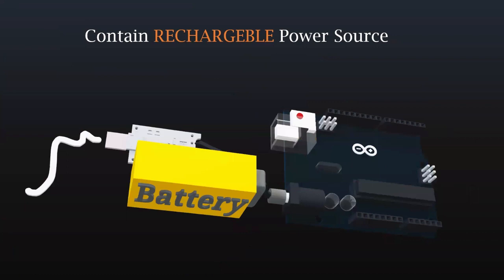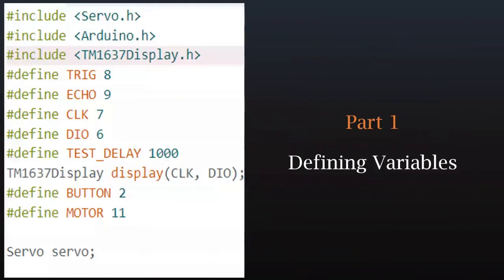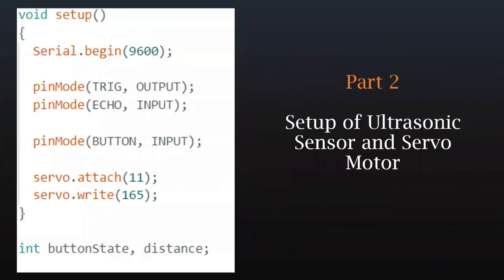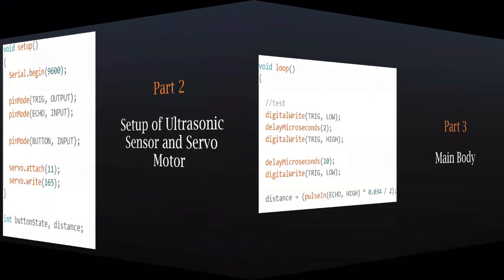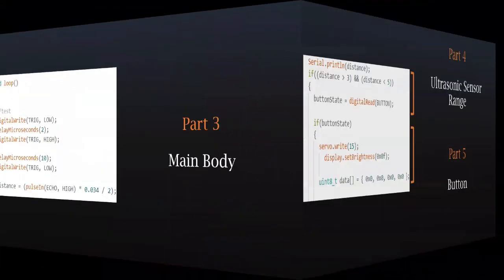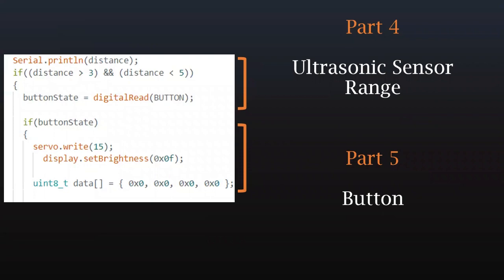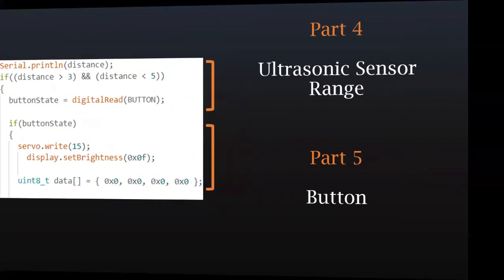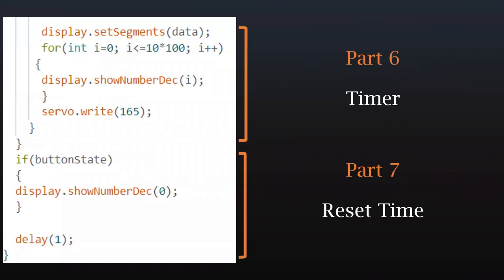The most important thing is we have a rechargeable power source for our device. For the coding part, we coded using Arduino. Part 1 is defining the variables. Part 2 is the setup of the ultrasonic sensor and servo motor. Part 3 is the main body of the coding. Part 4 is the ultrasonic sensor range. Part 5 is the setting of the button. Part 6 is controlling the timer. Part 7 is to reset the time.